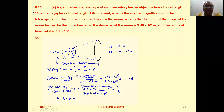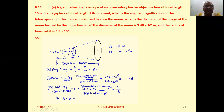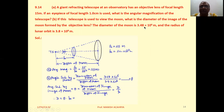Problem 9.14: A giant reflecting telescope at an observatory has an objective lens of focal length 15 meters. If an eyepiece of focal length 1 centimeter is used, what is the angular magnification of the telescope? If this telescope is used to view the moon, what is the diameter of the image of the moon formed by the objective lens? The diameter of the moon is 3.48 × 10⁶ meters and the radius of the lunar orbit is 3.8 × 10⁸ meters.